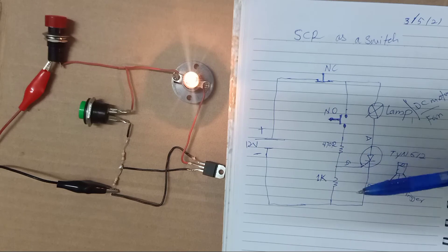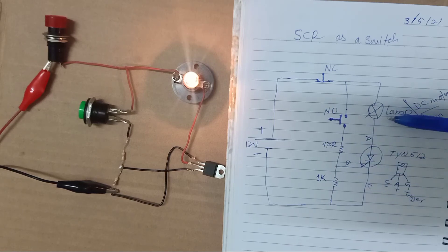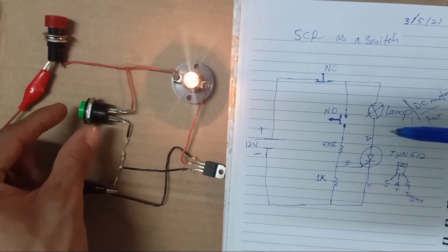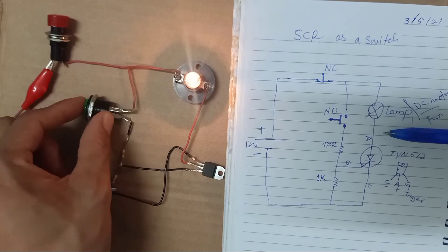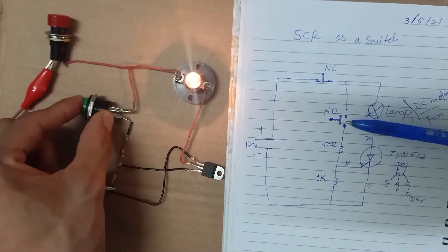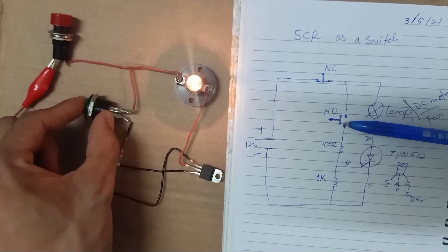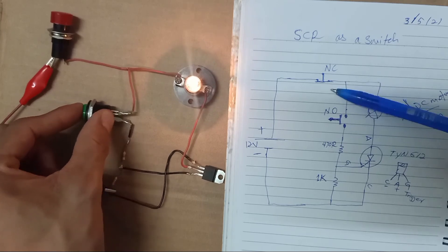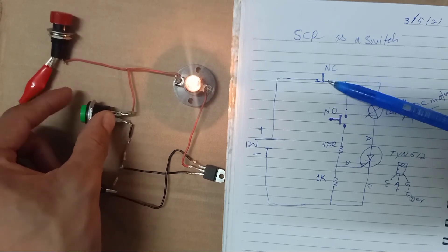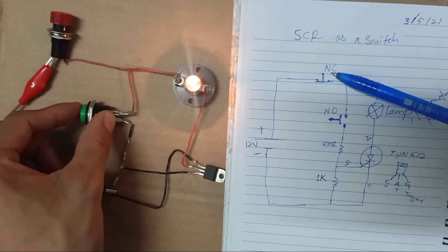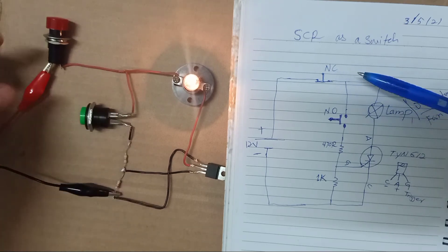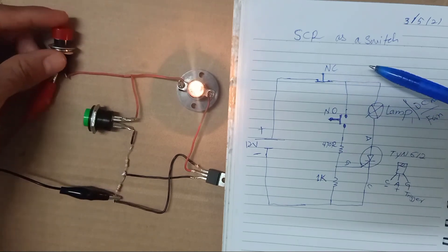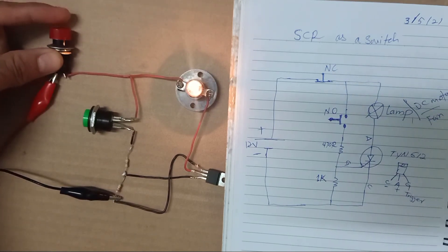To turn off the lamp, pressing the normally open switch does nothing different. To interrupt the current flow, you must press the normally closed switch — then the lamp will turn off.